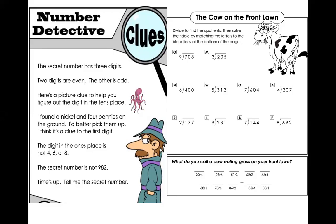I found a nickel and four pennies on the ground. I'd better pick them up. I think that's a clue to the first digit. The digit in the ones place is not four, six, or eight. The secret number is not 982. Time is up. Tell me the secret number. Good luck with that mystery number today, fourth grade. As always, call your teacher if you need assistance.